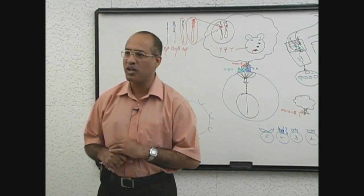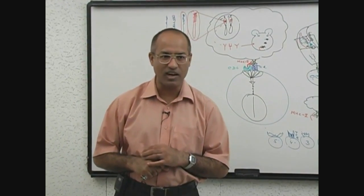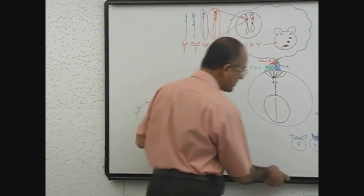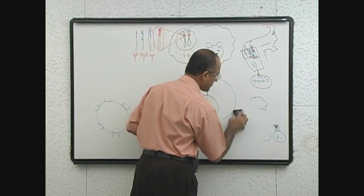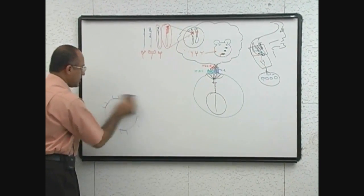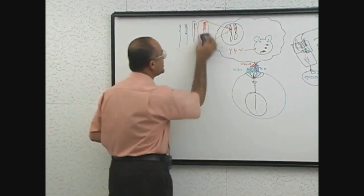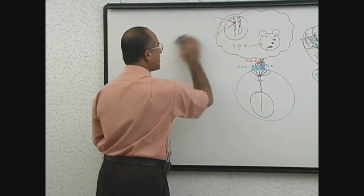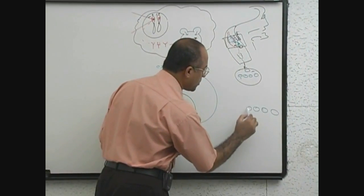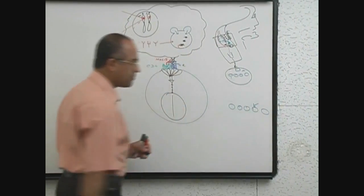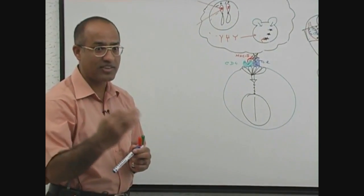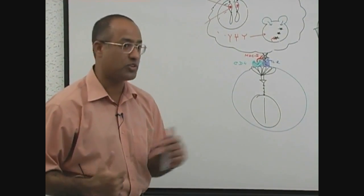This process is called clonal selection. Clonal selection of the T cell has been done. A T lymphocyte has been recognized. Let's suppose these were 1, 2, 3, 4 and 5. Out of that, this was selected. Now what will happen? This will give signal to the nucleus that happy news, the antigen with proper processing is at our door and let's get ready for the action.